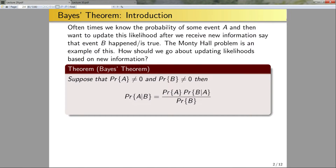The answer to this is Bayes' theorem, and this theorem is at the heart of an entire branch of statistics, so it is very, very important in practice. Suppose that the probability of A happening is non-zero and also suppose that the probability of B happening is also non-zero. Then the probability of A given B is equal to the probability of A times the probability of B given A, all divided by the probability of B.